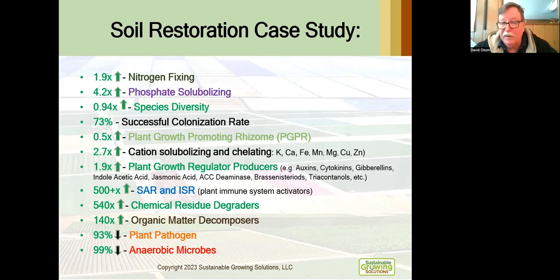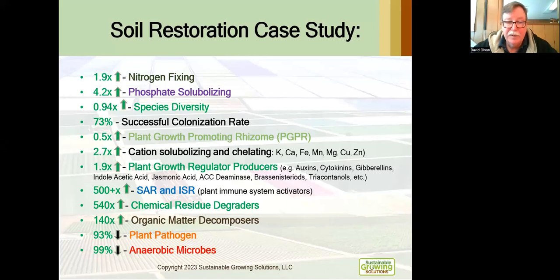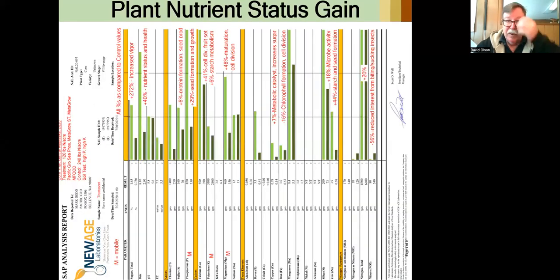This makes your plant much more resilient to pests, diseases, toxins, and stress — whether heat, cold, or drought. There was also a 540-time increase in chemical residue degraders, breaking down all those old chemical materials in the soil. A 140-time increase in organic matter decomposers, so crop residue breaks down much more quickly. A 93% reduction in plant pathogens — in this case, fusarium was the dominant fungal pathogen, and in subsequent testing it was almost a non-detect. And then a 99% reduction in anaerobic microbes.